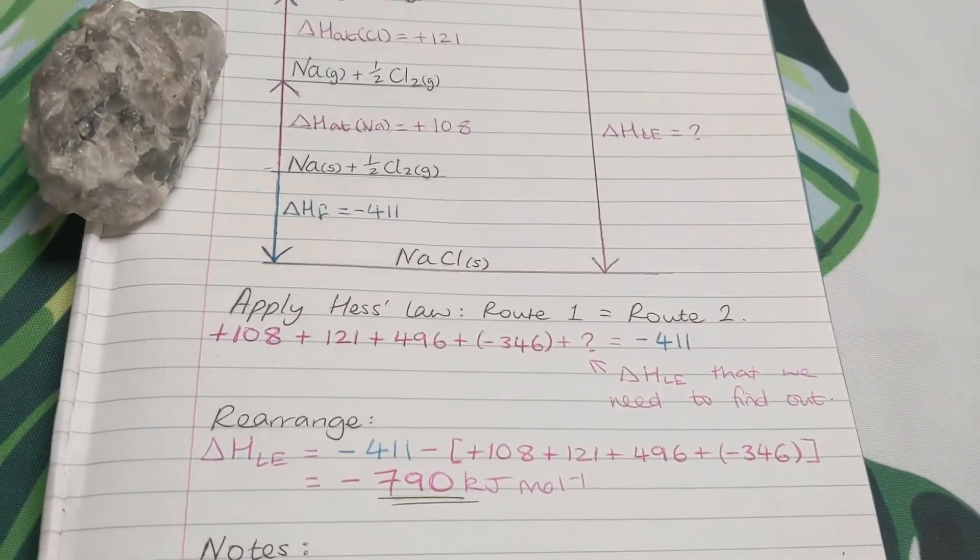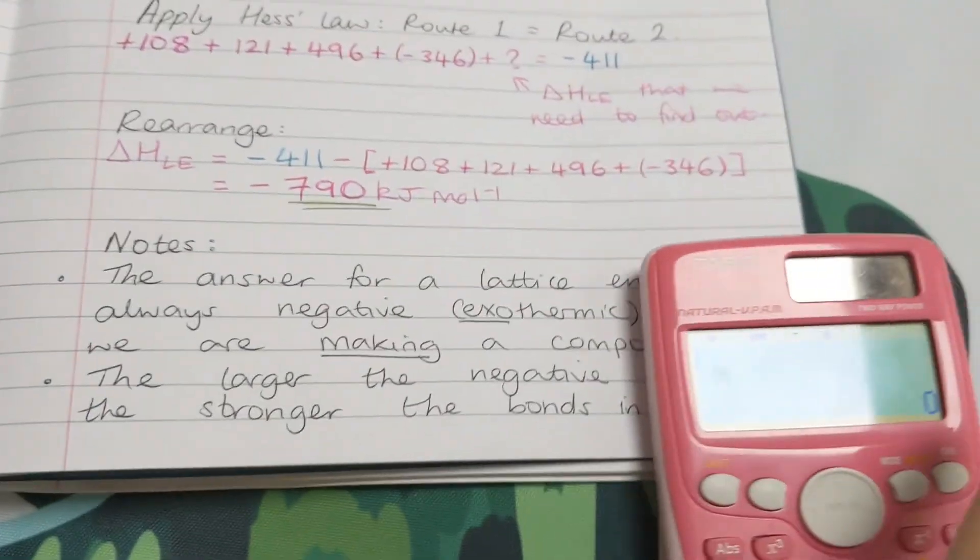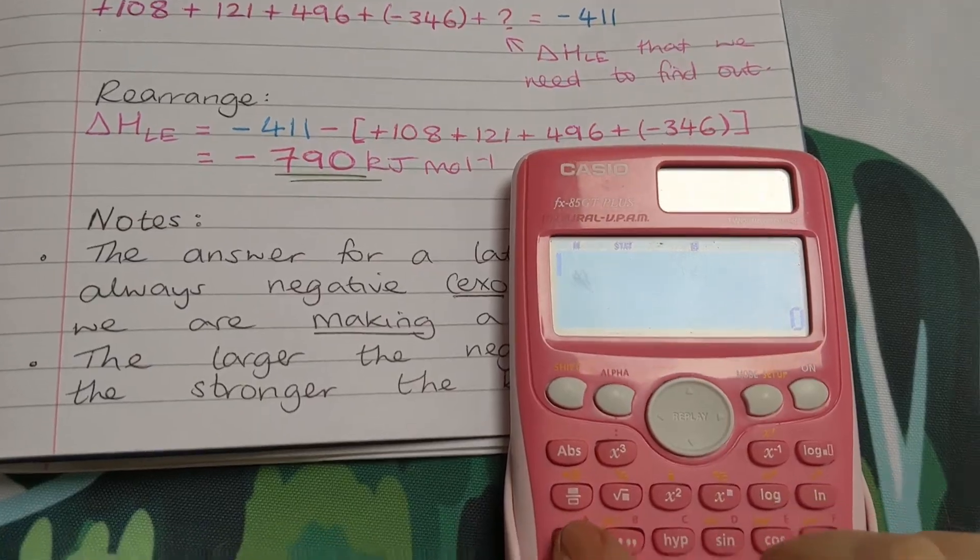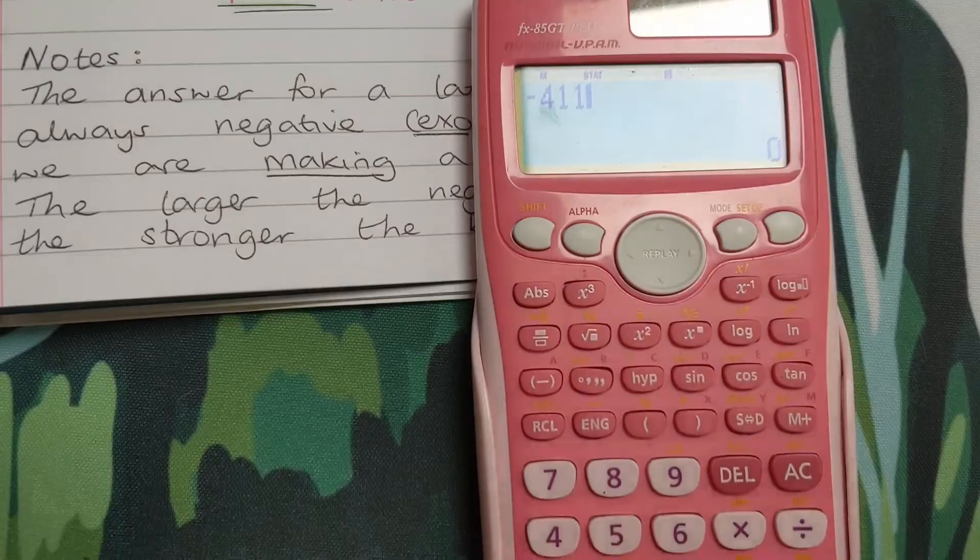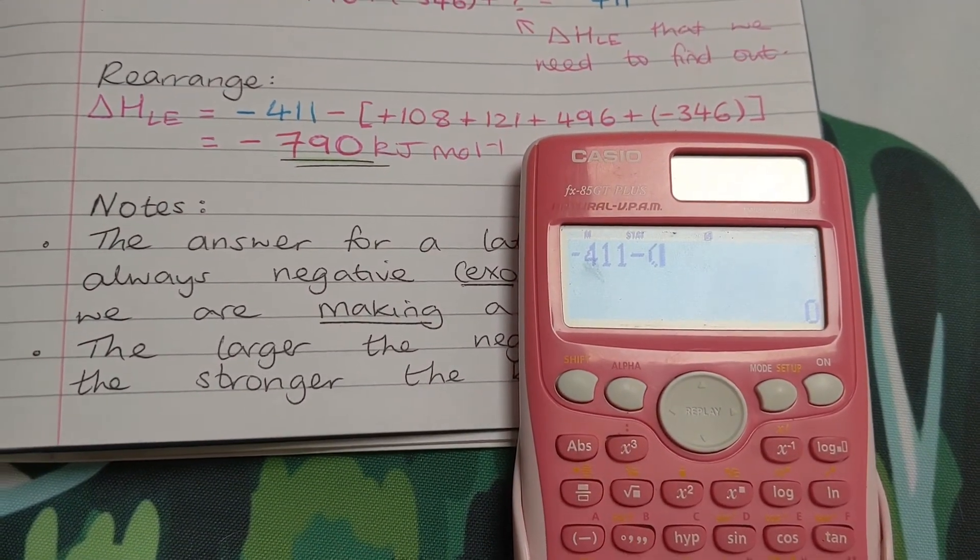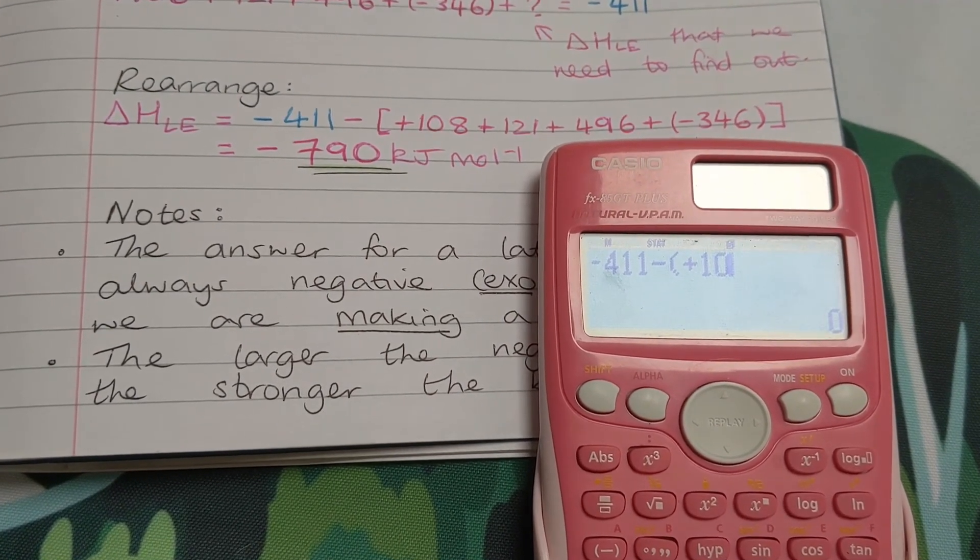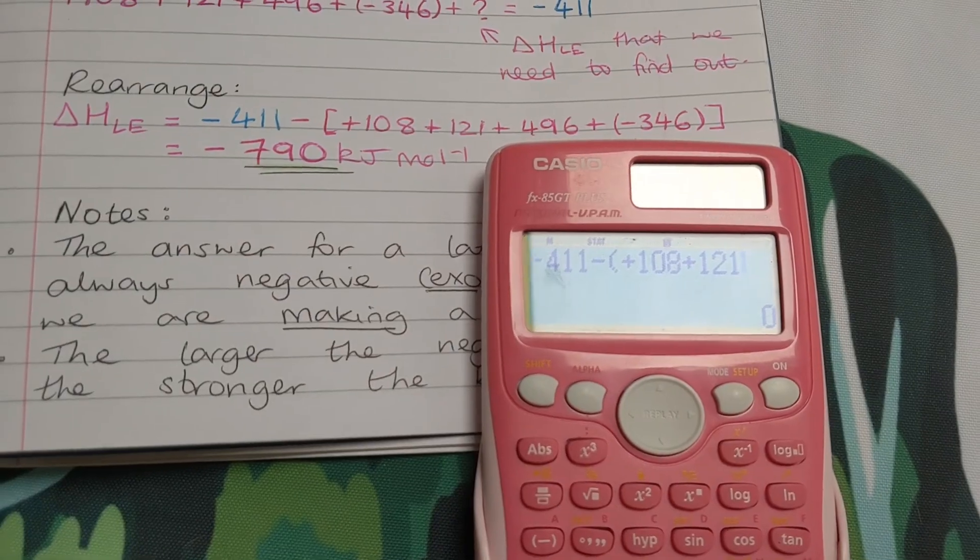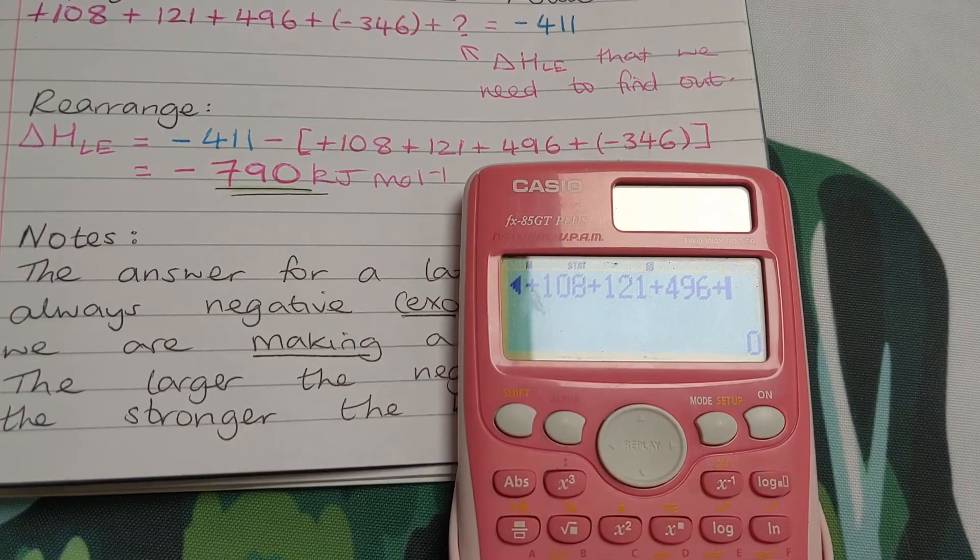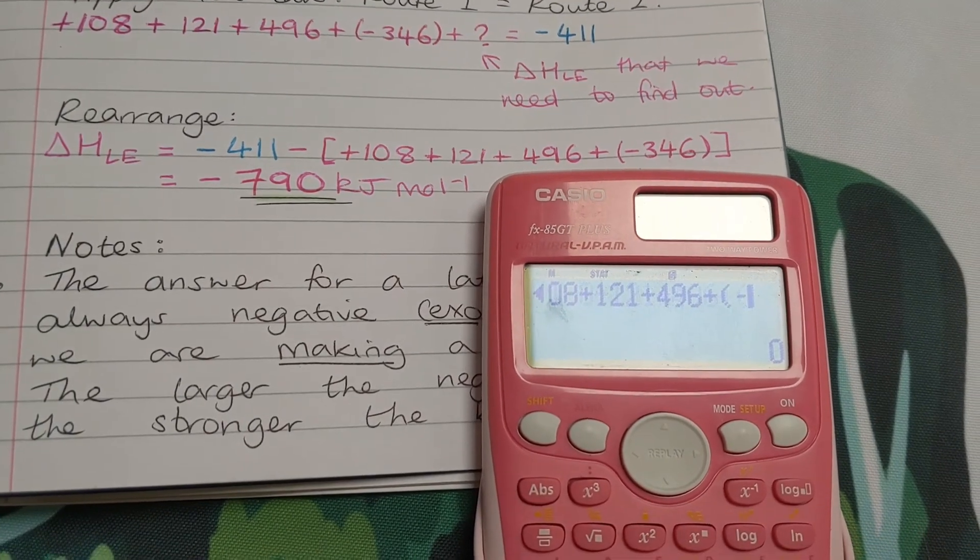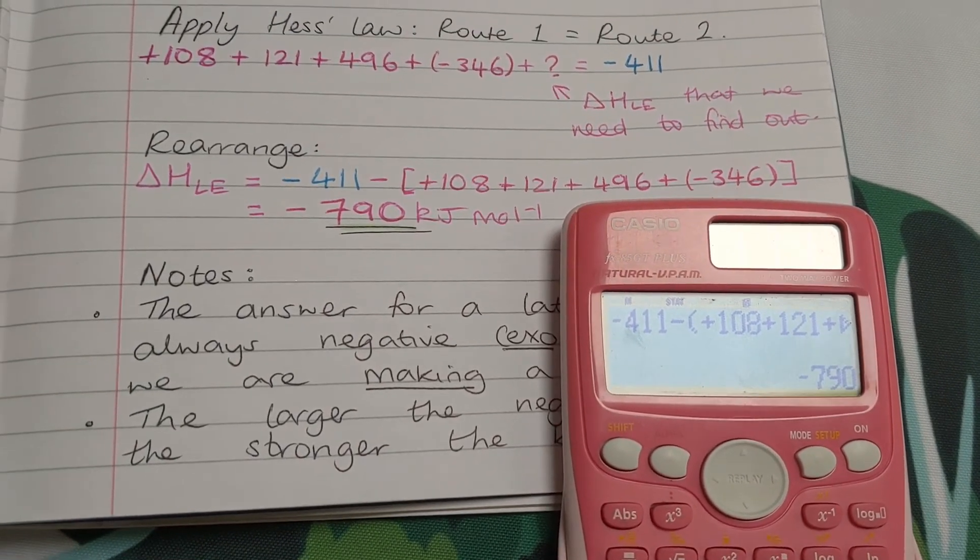Okay, so I'm going to show you how to put it in the calculator, in case you're unsure. I should put that here. So, this minus, minus 411, minus brackets. Very important to use brackets. So don't try and do this on a mobile phone, you'll get a funny answer. 108 plus 121, plus 496, plus brackets, minus 346, close brackets, equals minus 790.